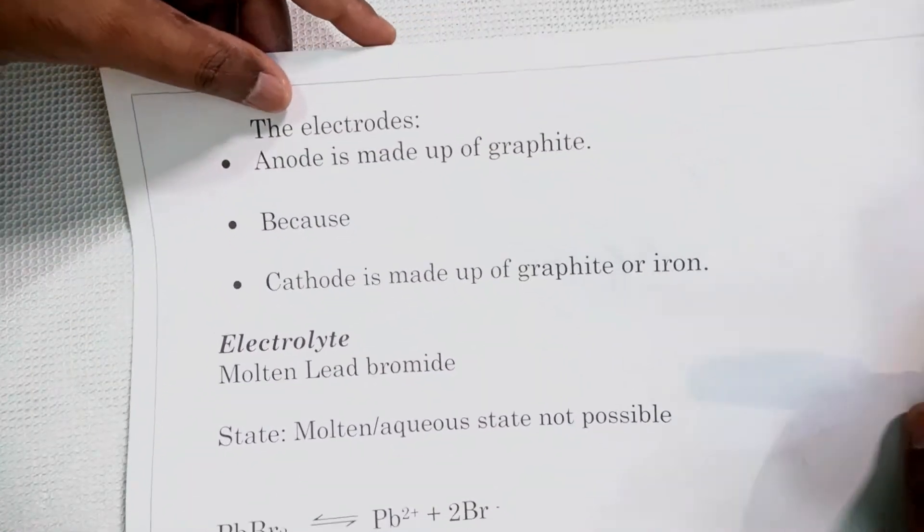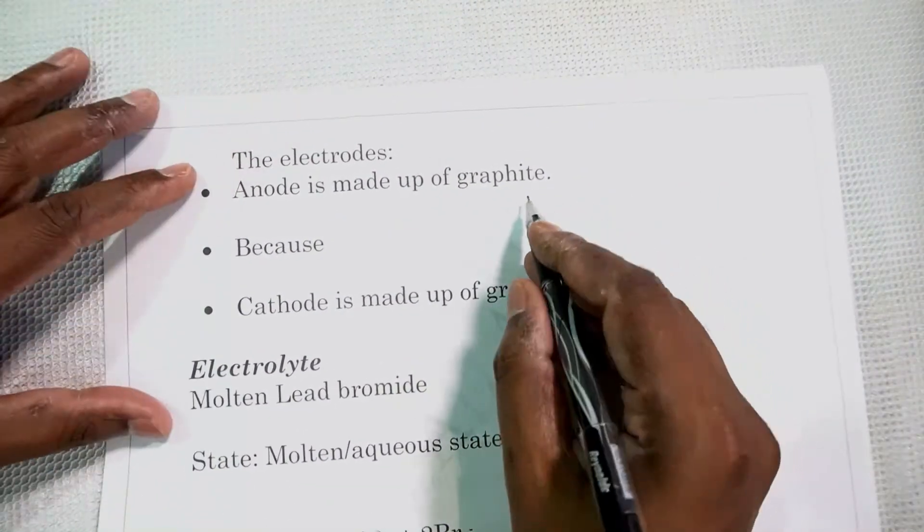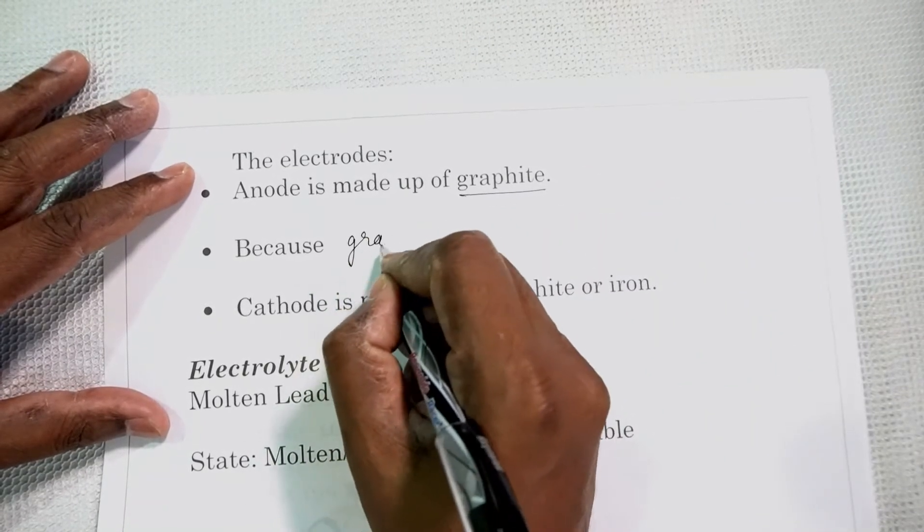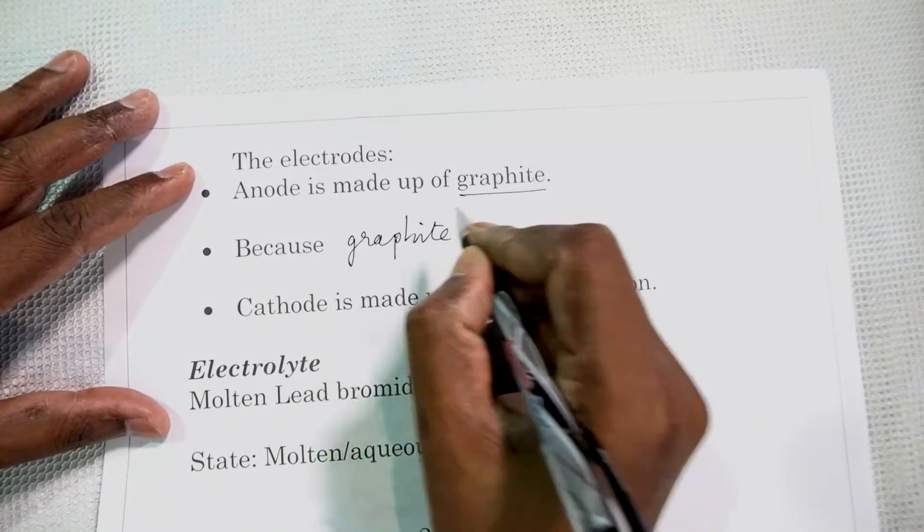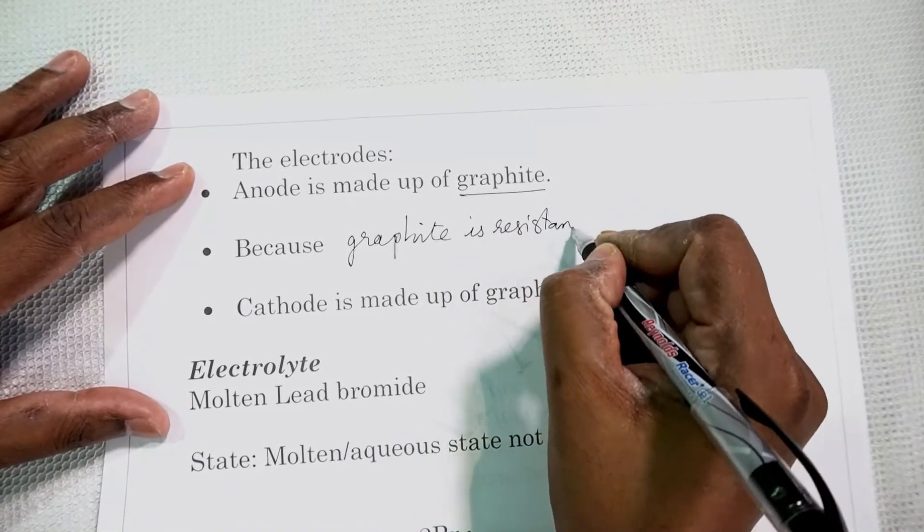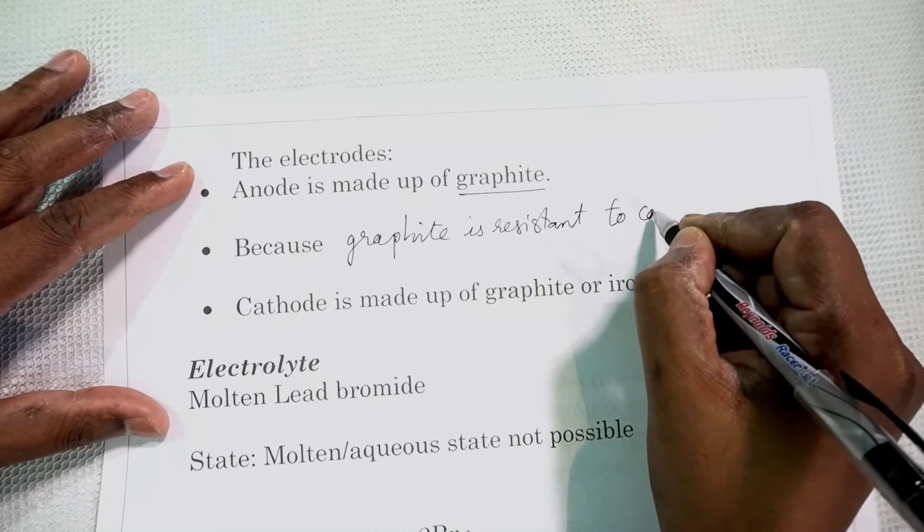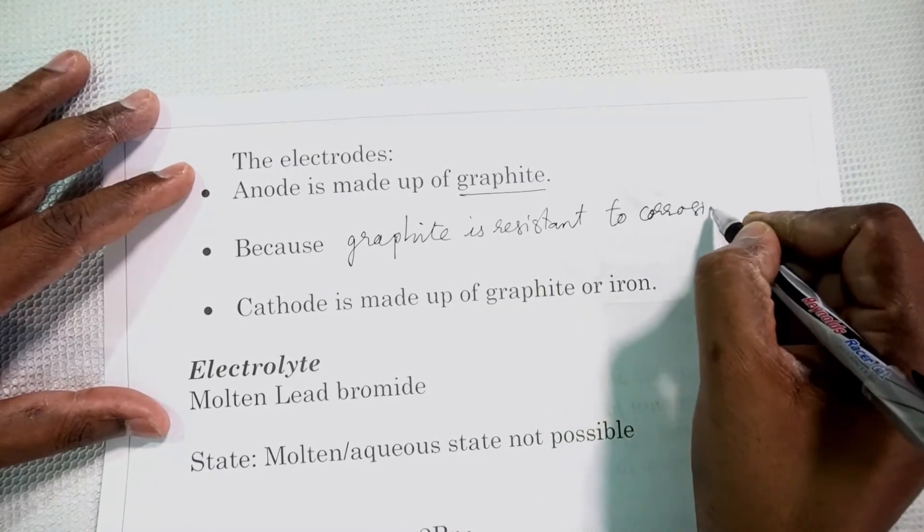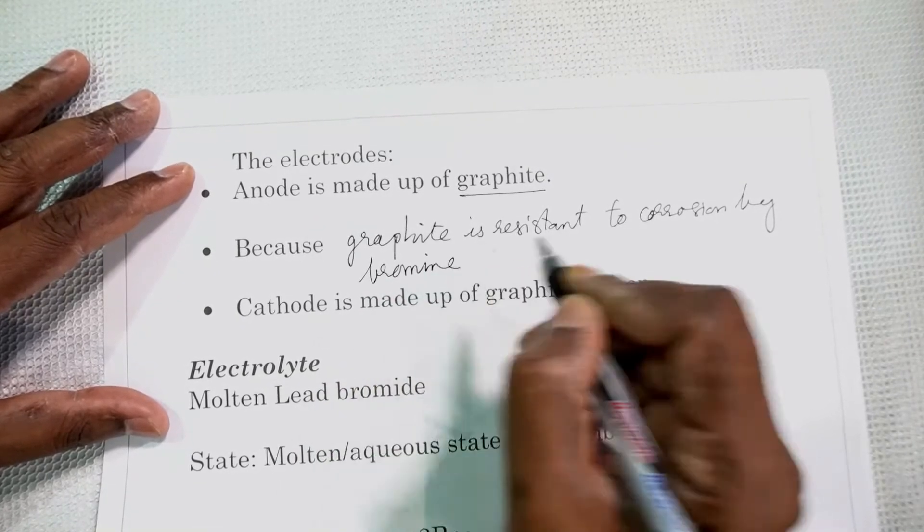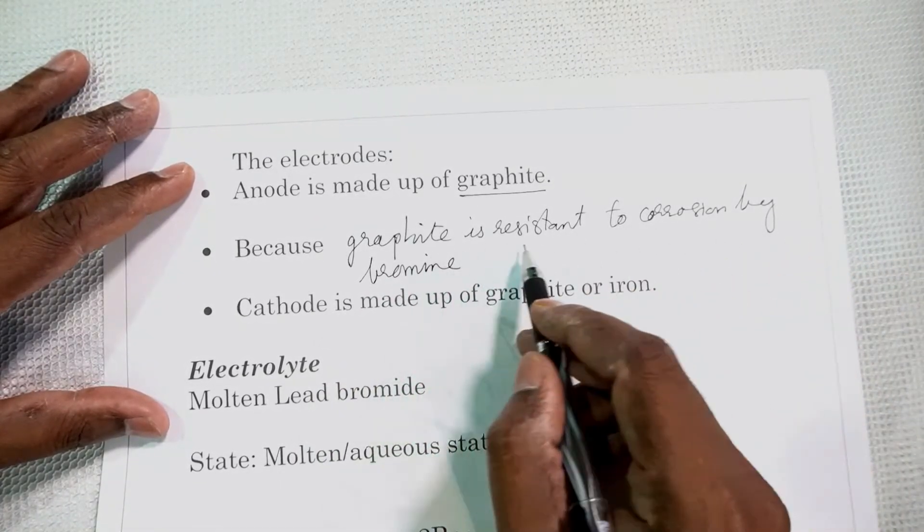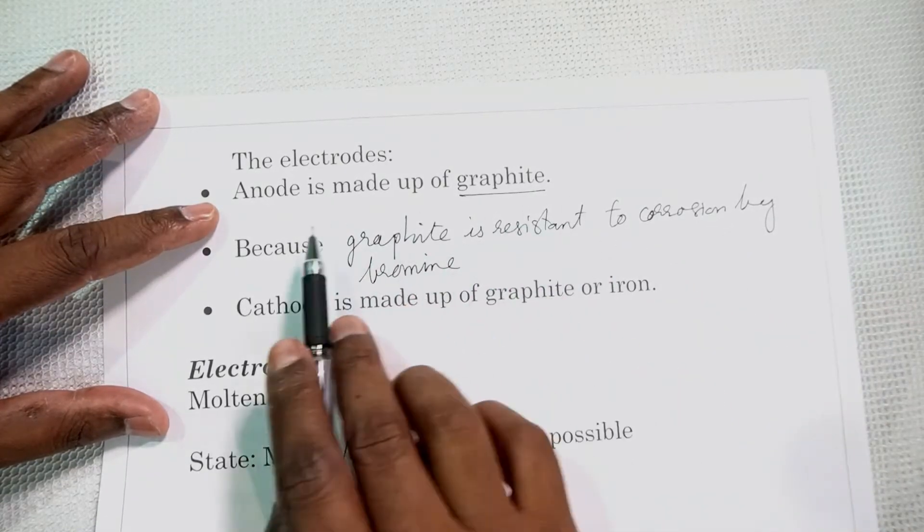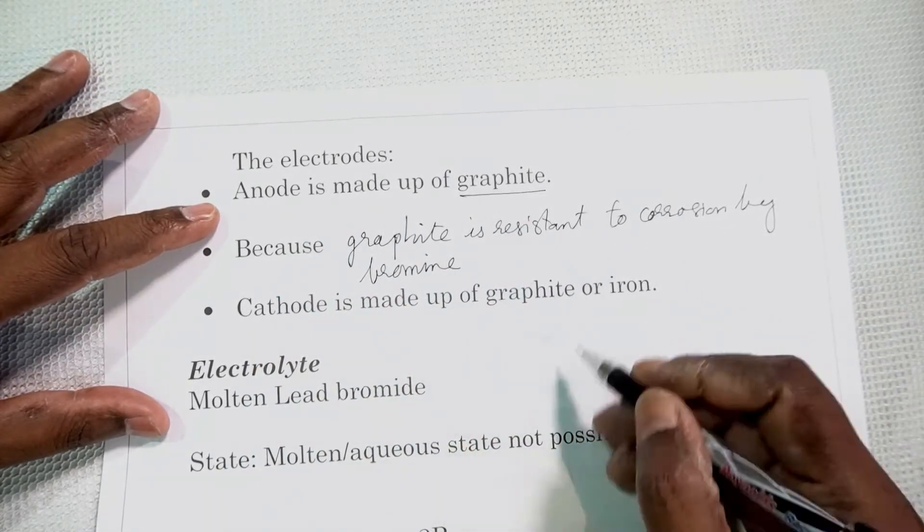That is the electrodes used. The electrodes, anode is made up of graphite. Again because graphite is resistant to corrosion by bromine. Now bromine is highly reactive, it is a halogen. So if graphite is used, it does not react. So anode, the product at anode is bromine.